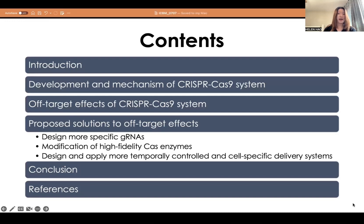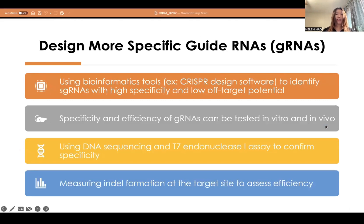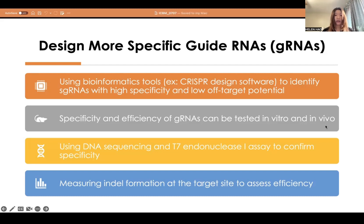Knowing the cost of off-target effects, proposing a solution to reduce the risk of such effects becomes critical. One approach is to design and use more specific guide RNAs which can recognize and bind to the target DNA with higher specificity, since guide RNAs indicate the location where the cut should be made. Bioinformatic tools, such as CRISPR design software, can identify sgRNAs with high specificity and low off-target potential. Specificity and efficiency of guide RNAs can be tested using DNA sequencing and T7 endonuclease-1 assay. Indel information can also be measured to assess the efficiency of the CRISPR-Cas9 system at the target site.